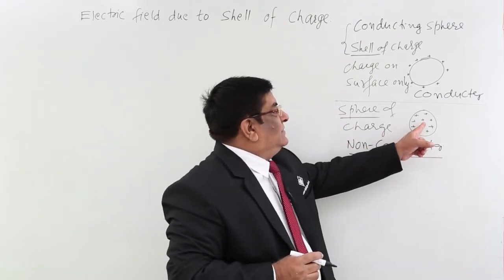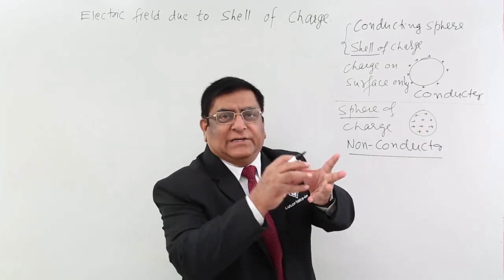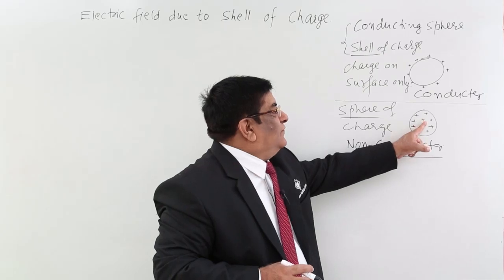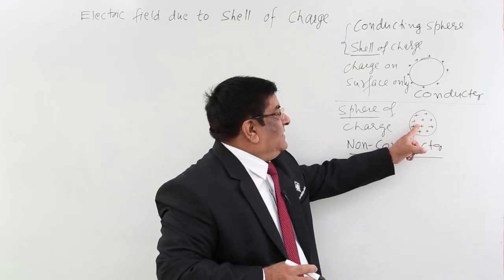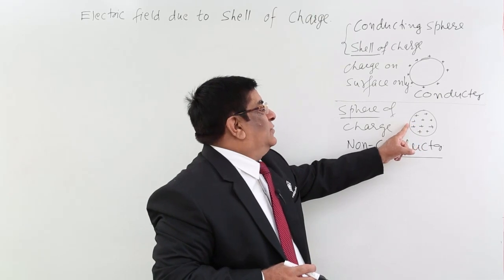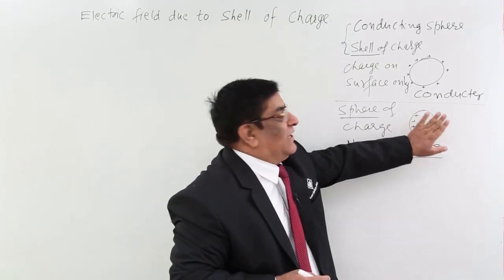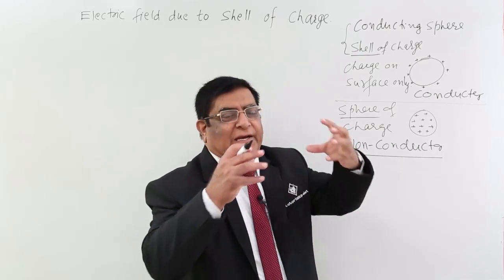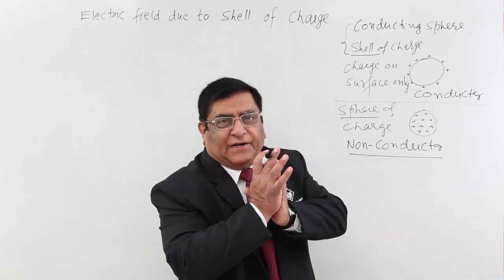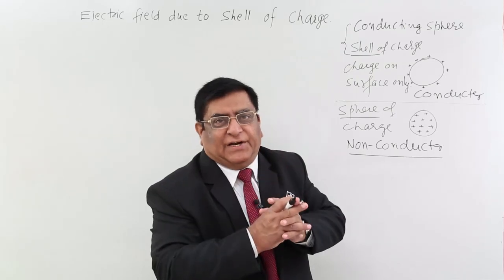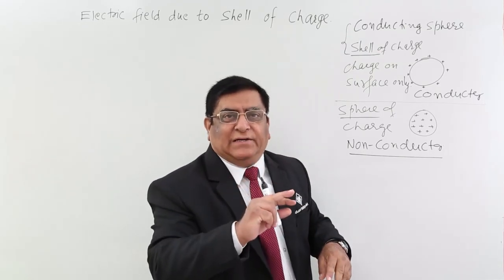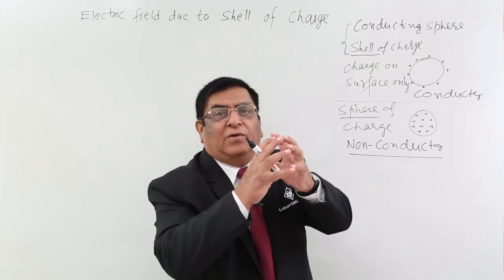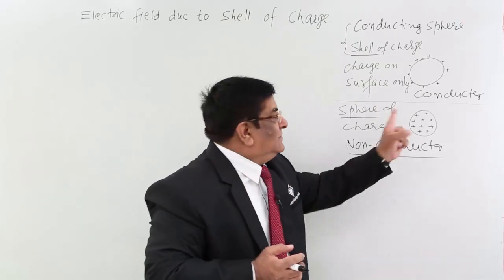When we give charge to a non-conductor inside, this material does not allow charge to move. Even if they repel each other, they cannot move and cannot come to the surface, so they remain inside. Like when a cloud enters another cloud, there is friction and a lot of charge is generated. Cloud is a bad conductor, charge cannot come out, so charge is distributed all within the cloud. That is this case.